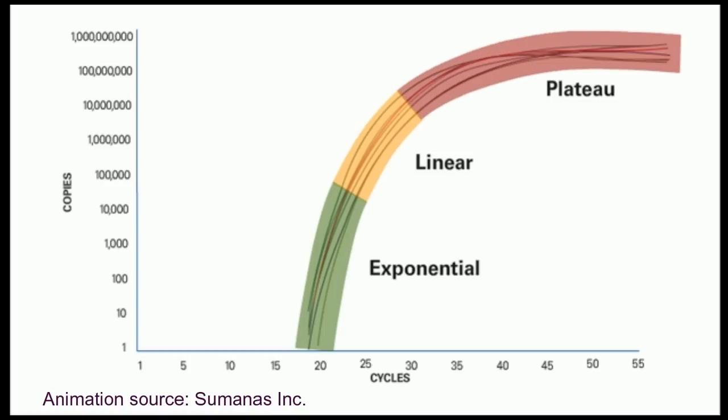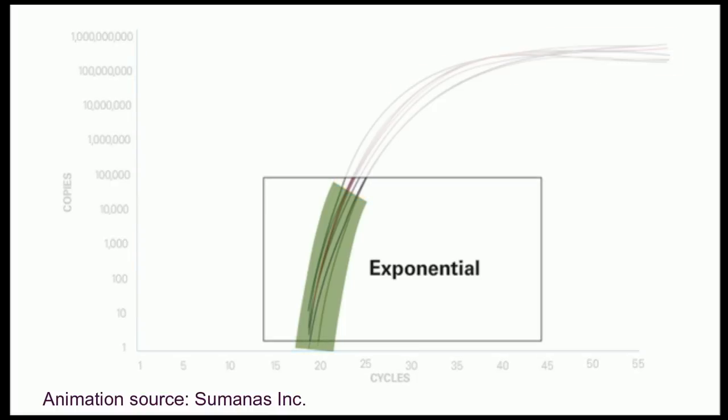In the plateau phase, the reagents are depleted, and the PCR reaction stops. Real-time PCR focuses on the exponential phase because it provides the most precise and accurate data for quantitation.